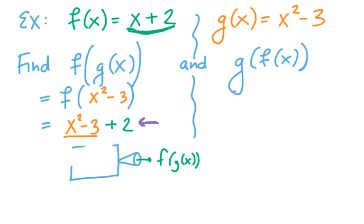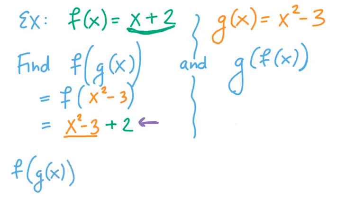If we want to simplify to wrap it up, we sure can. In this case, as you can tell, that just looks like combining like terms. So I'm going to wrap this example up by saying f(g(x)) = x² - 1 when I combine my like terms.